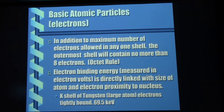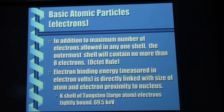Electron binding energy is directly linked with the size of the atom and proximity to the nucleus. One of the most important elements we talk about is tungsten. Tungsten is a big atom — it's got an atomic number of 74, so it's got 74 protons. The electron binding energy on a tungsten atom at the K shell level is 69.5 keV — kilo-electron volts — so 69,500 electron volts. That's a bunch. Electron volts are slightly different from regular volts.